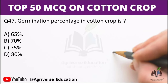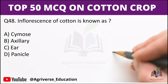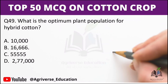Question 47: Germination percentage in cotton crop is 65%. Next question: Inflorescence of cotton is known as — just as we read about rice, wheat, and maize inflorescence types, in cotton, the inflorescence is known as axillary. So axillary is the inflorescence of cotton crop.